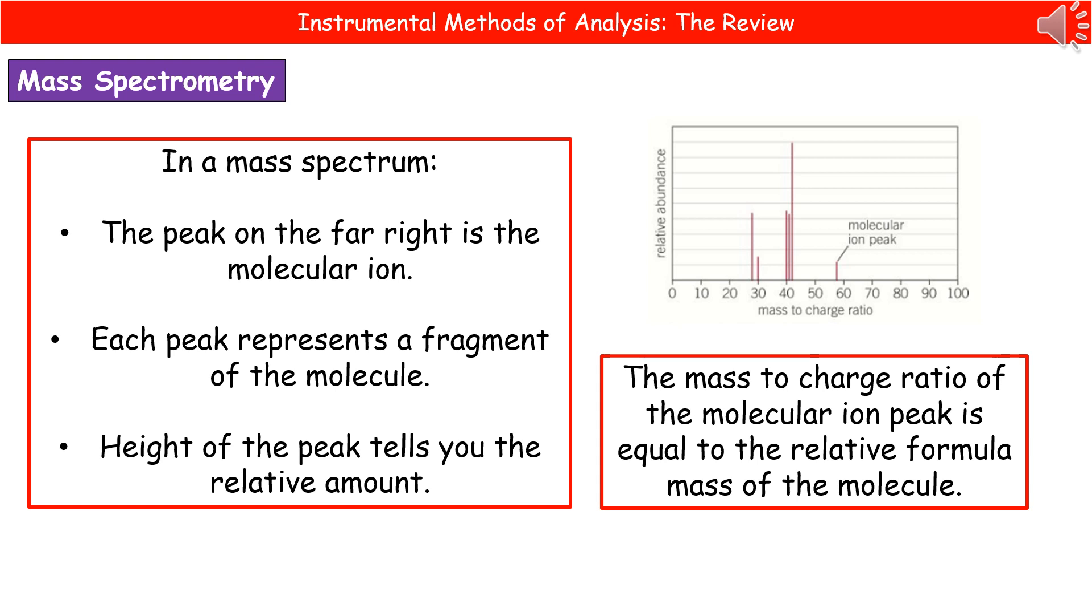Molecular ion, quite simply, is going to be the same as our relative formula mass of the molecule. So if you're looking at the whole molecule, the molecular ion peak is it. So when you actually read that, we know that that sample there, for example, has a relative formula mass of, looks like, about 58. If they give that to you in the exam, the scale would be much clearer, so you can actually read off the exact relative formula mass.